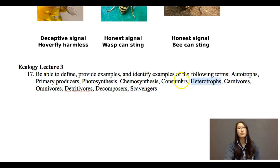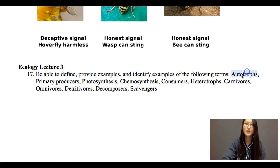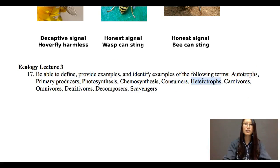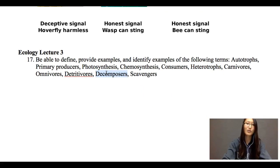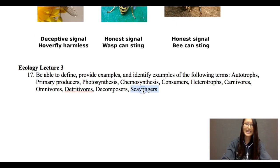A heterotroph is always a consumer. An autotroph can produce its own food — that's the producer as well. Plants, fungi, some bacteria, and phytoplankton are all producers or autotrophs. If you have a consumer or a heterotroph, those organisms cannot make their own food — they have to eat other producers or consumers in order to live. You also need to know decomposers, which break things down, and scavengers — for example, vultures — which are organisms that eat large dead animals.